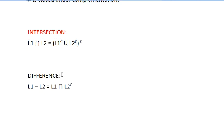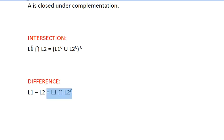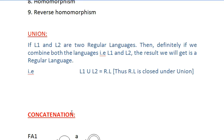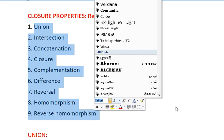For difference: from set theory, A minus B equals A intersection B_complement. Similarly, L1 minus L2 equals L1 ∩ L2_complement. We already know the proofs for complementation and intersection, so combining them proves this property, though the derivation is a bit lengthier. In competitive exams, they often ask whether a given language satisfies a closure property, so understanding all nine properties is important.